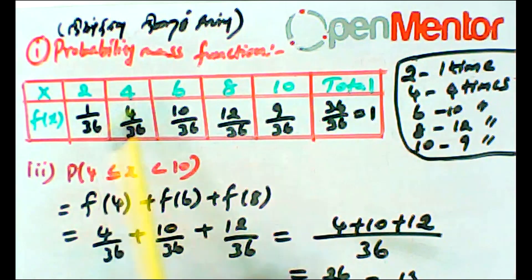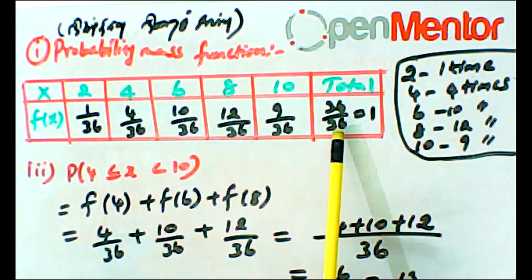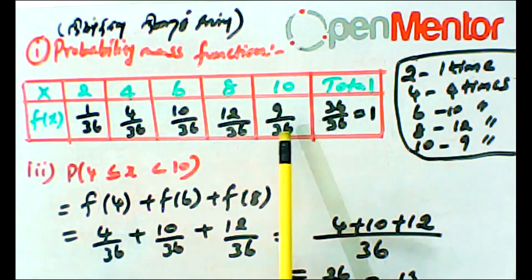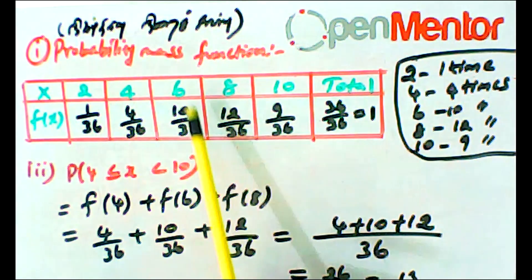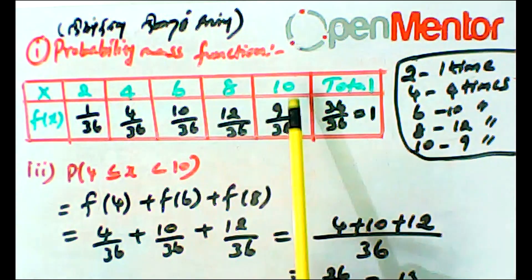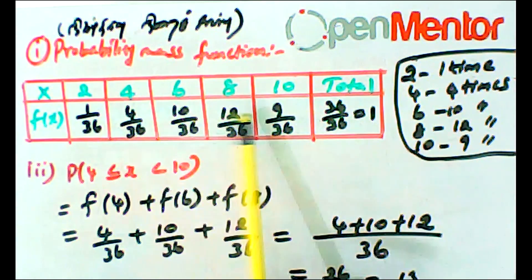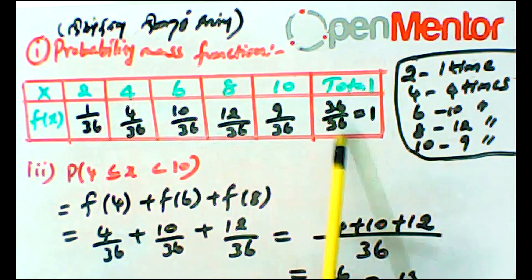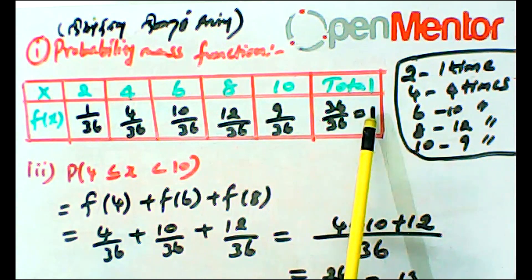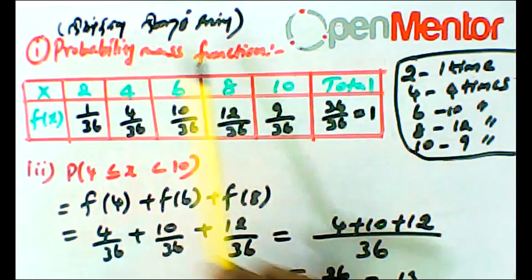For x equal to 2, probability is 1/36. For x equal to 4, probability is 4/36. The total sample space is 36. For x equal to 6, x equal to 8, and x equal to 10, we compute their probabilities such that the total probability sums to 1.